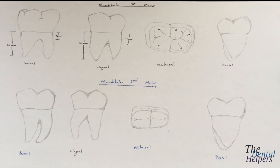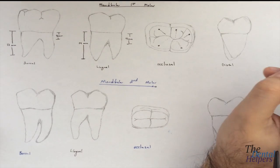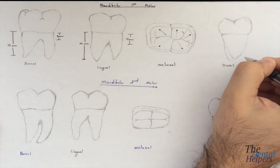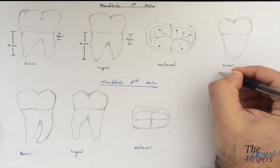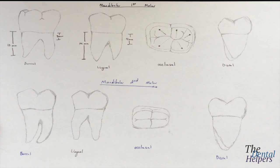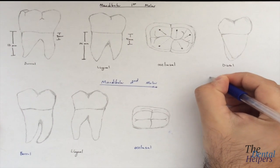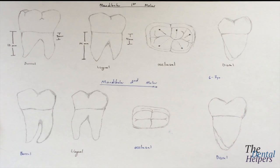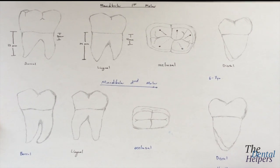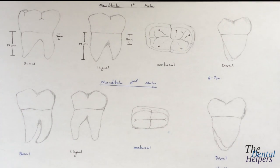Now we're going to look at mandibular molars, specifically the first and second molars. In the next video we're going to go into the third molars. Similar to the maxillary first molars, the mandibular first molars are going to erupt around 6 to 7 years old. The mandibular second molars are going to come out around 11 to 13. The maxillary seconds came out around 12 years old, so it's about the same.